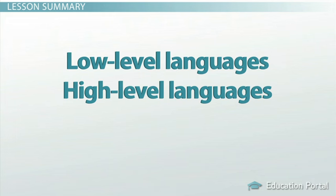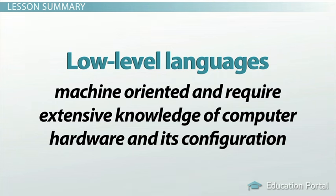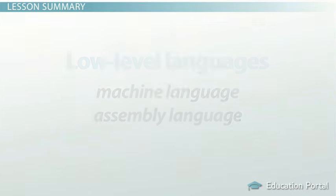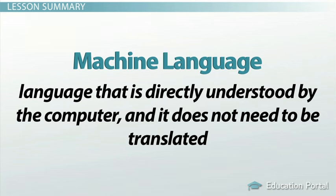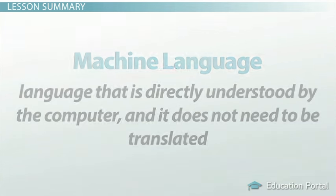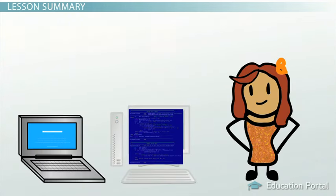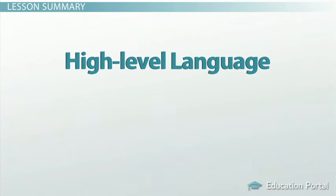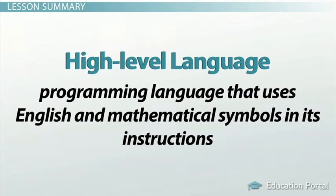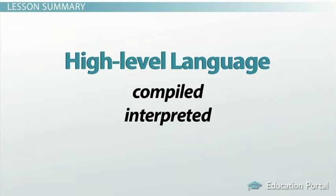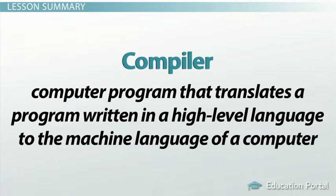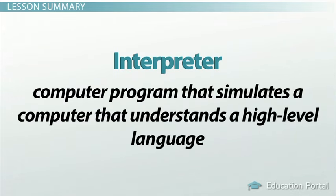In summary: there are two major types of programming languages — low-level and high-level. Low-level languages are machine-oriented and require extensive knowledge of computer hardware. Their two categories are machine language, which consists of binary code and is directly understood by the computer, and assembly language, which consists of symbols and letters and requires translation to machine language. Both are hardware-specific. A high-level language uses English and mathematical symbols in its instructions and can be compiled — where the entire program is translated prior to execution — or interpreted, where the program is translated line by line during execution.